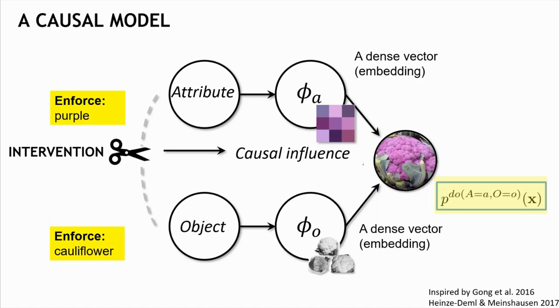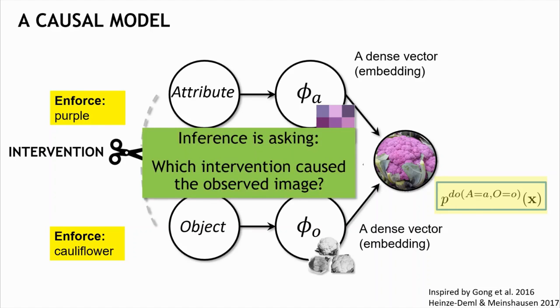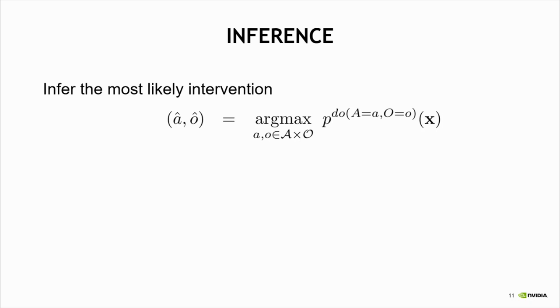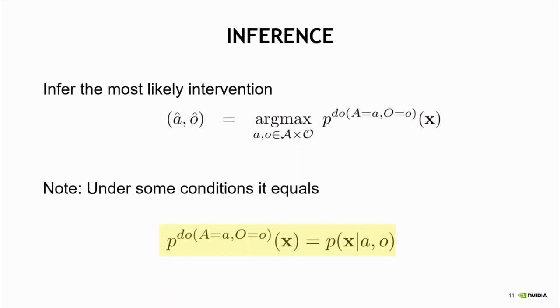We can compute the probability of an image given this enforced intervention, and under some simplifying assumptions, this interventional distribution becomes equivalent to the simple conditional distribution.